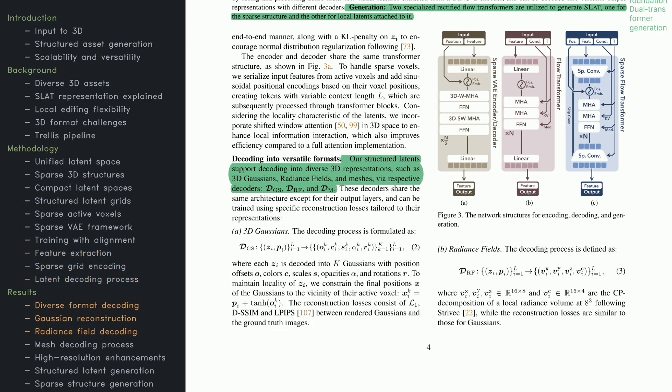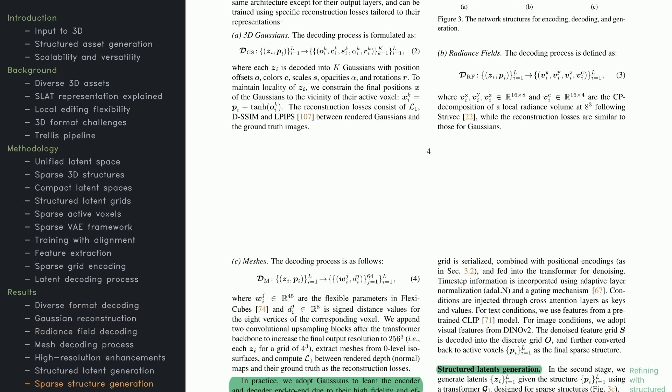Here's a closer look at the decoding phase. The structured latents can be turned into formats like gaussians, radiance fields, or meshes. Let's say you choose gaussians. Each latent stores properties like position, color, scale, opacity, and rotation, all constrained to match the voxel locations. Loss functions ensure the decoded components match the target appearance and geometry. For radiance fields, you generate volumetric data that renders into 3D scenes. All these decoders share the same overarching design but are tweaked for each format's unique demands.